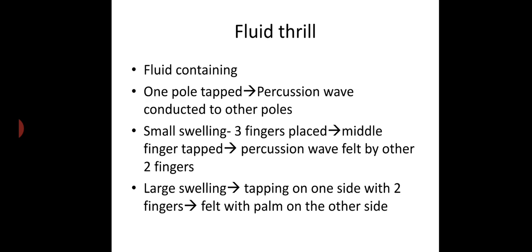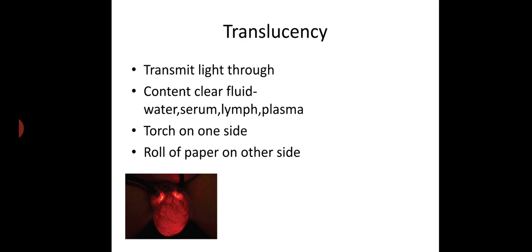Next, fluid thrill — tested in swellings containing fluid. One pole is tapped and the percussion wave is conducted to the other pole. For small swellings, three fingers are placed and the middle finger is tapped, with the percussion wave felt by the other two fingers. For large swellings, tapping is done on one side with two fingers and the fluid thrill is felt with the palm on the other side. Next, translucency — seen in swellings which transmit light, when the content is clear fluid like water, serum, lymph, or plasma. A torch is kept on one side and a roll of paper on the other side.